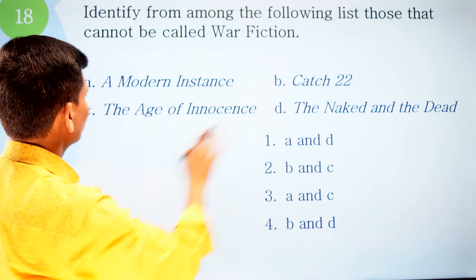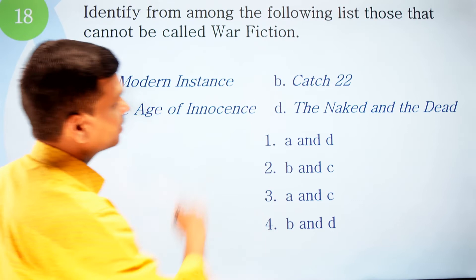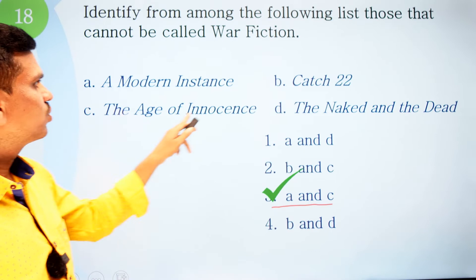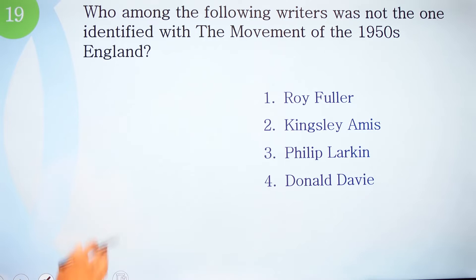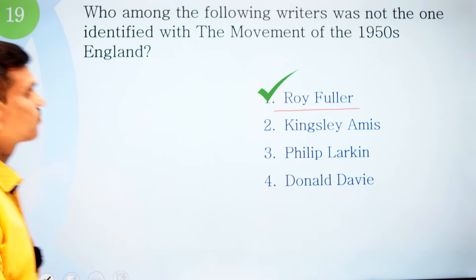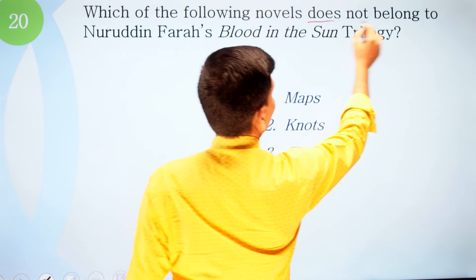Question eighteen: Identify from the following list those that cannot be called war fiction. Options: A, 'A Modern Instance'; B, 'Catch-22'; C, 'The Age of Innocence'; D, 'The Naked and the Dead.' The correct option is number three — A and C: 'A Modern Instance' and 'The Age of Innocence' cannot be called war fiction. Question nineteen: Who was not identified with the Movement of 1950s England? Options: one, Roy Fuller; two, Kingsley Amis; three, Philip Larkin; four, Donald Davie. The correct option is number one, Roy Fuller.